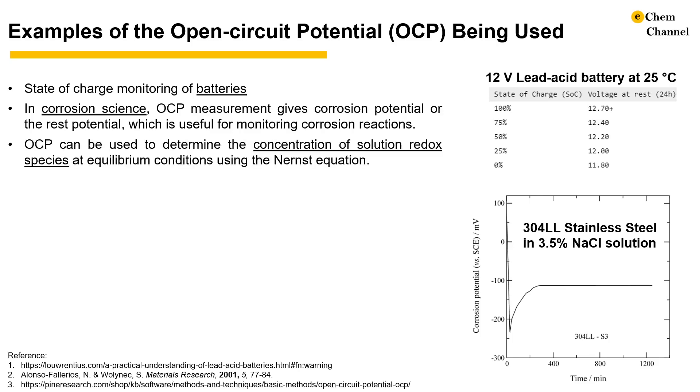In the classic textbook example, the Nernst equation can use OCP values to determine the concentration of redox species in the solution.